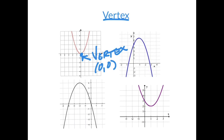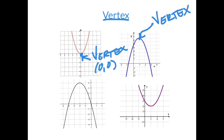Going to the next parabola, I notice how this one is going up and then starts going down. That turning point right here is called my vertex. In this case, my vertex is 1 comma 7.